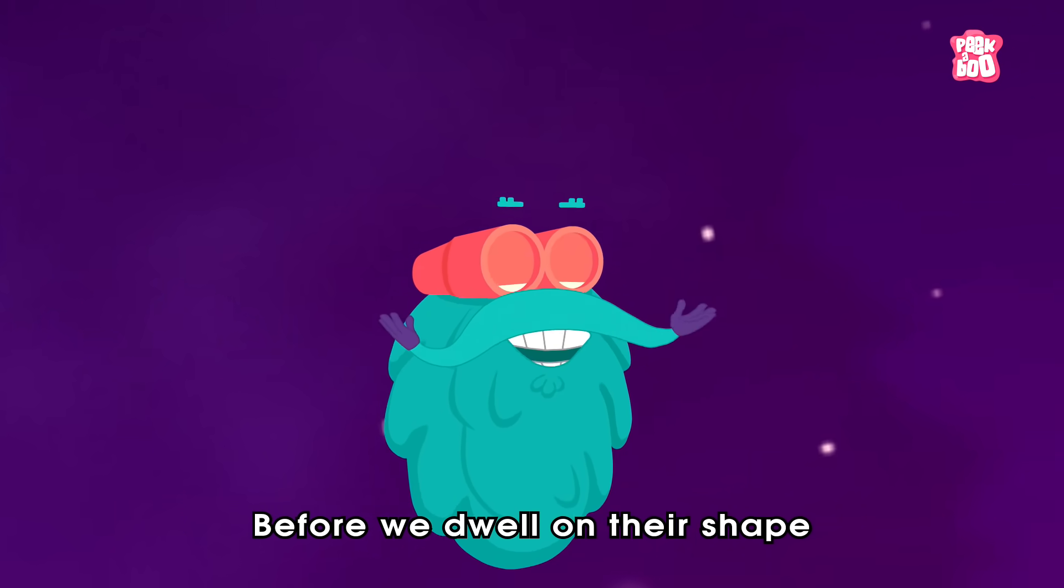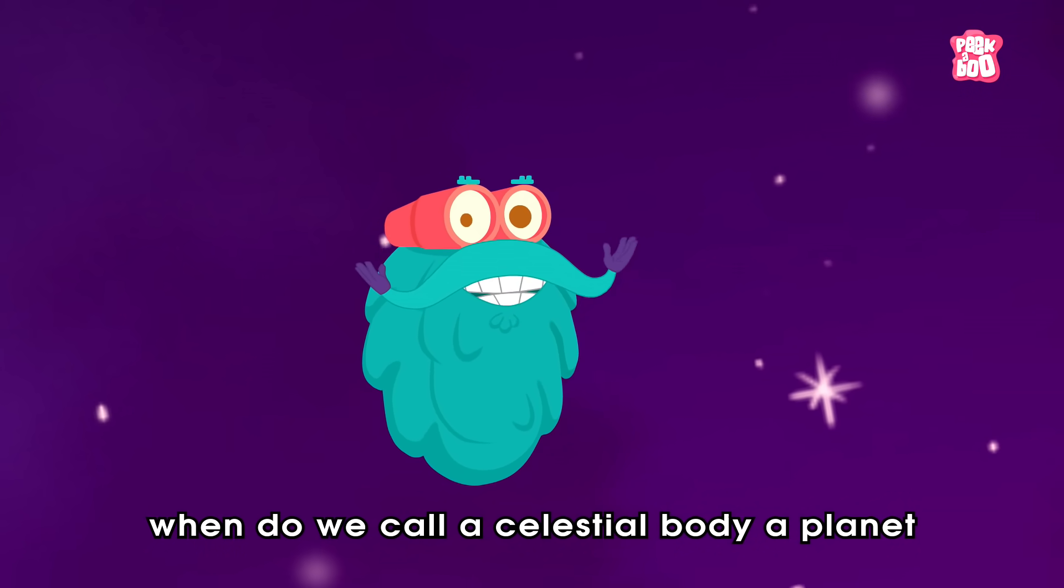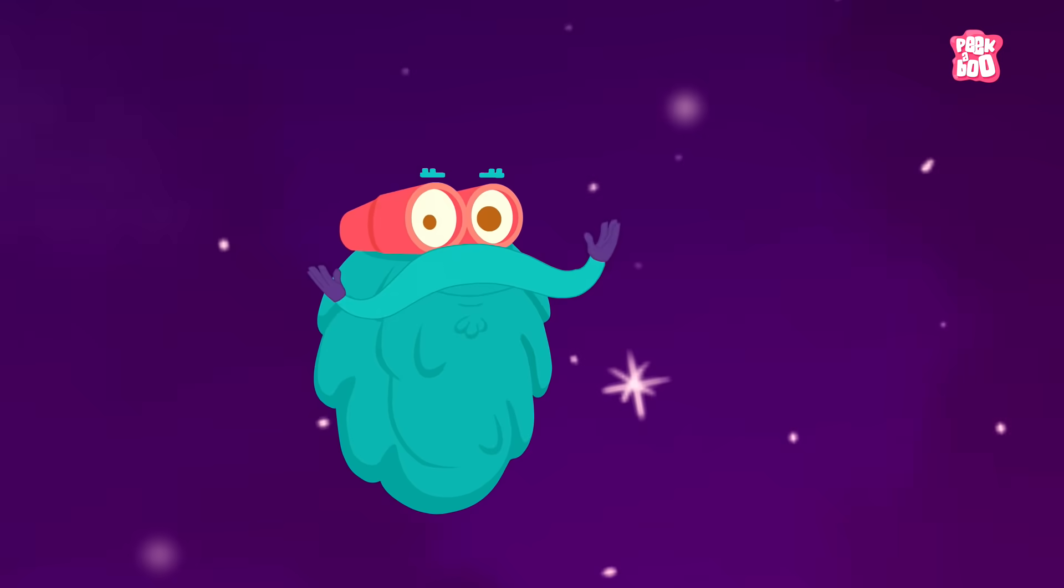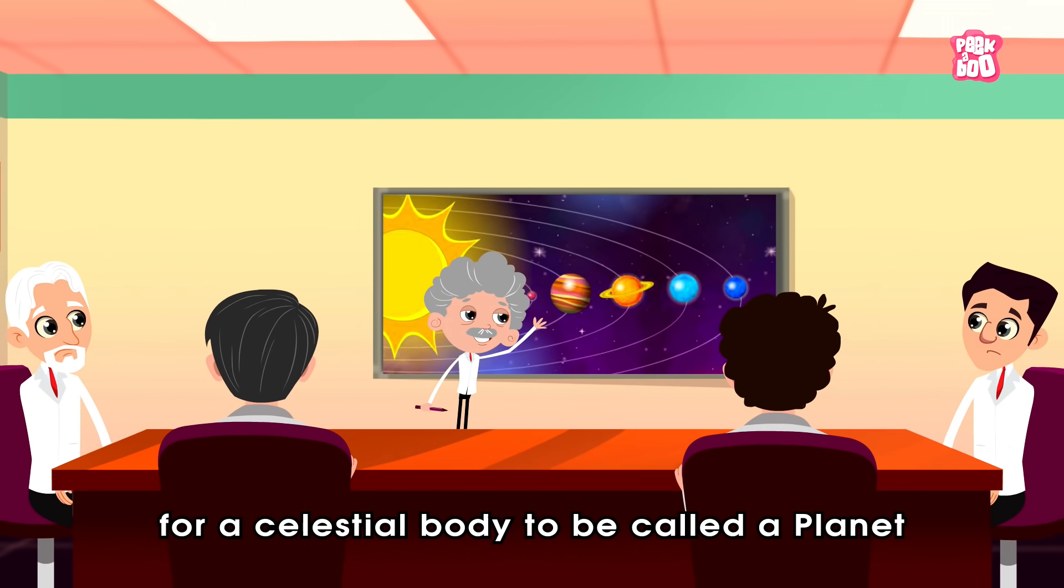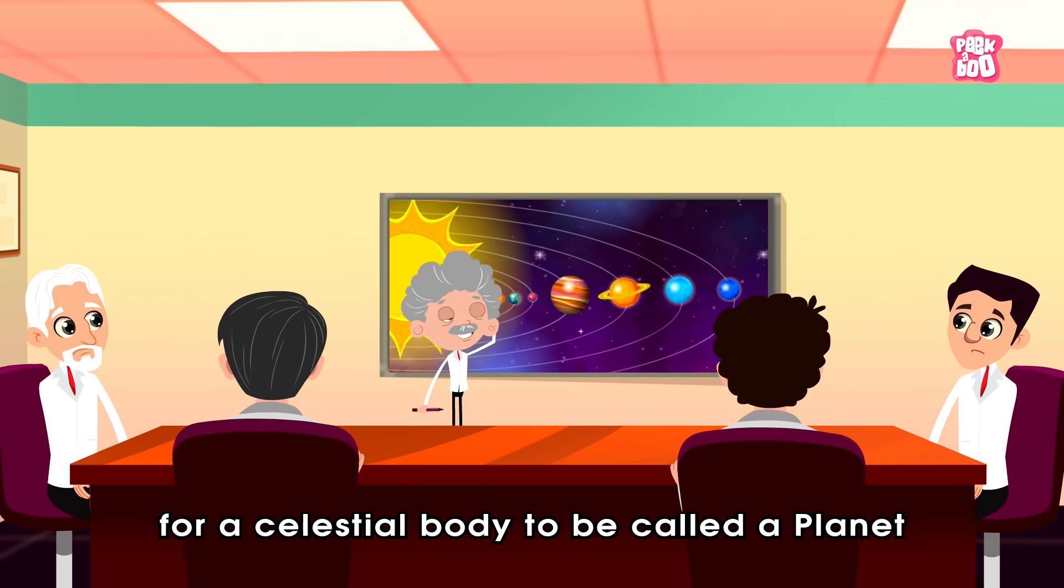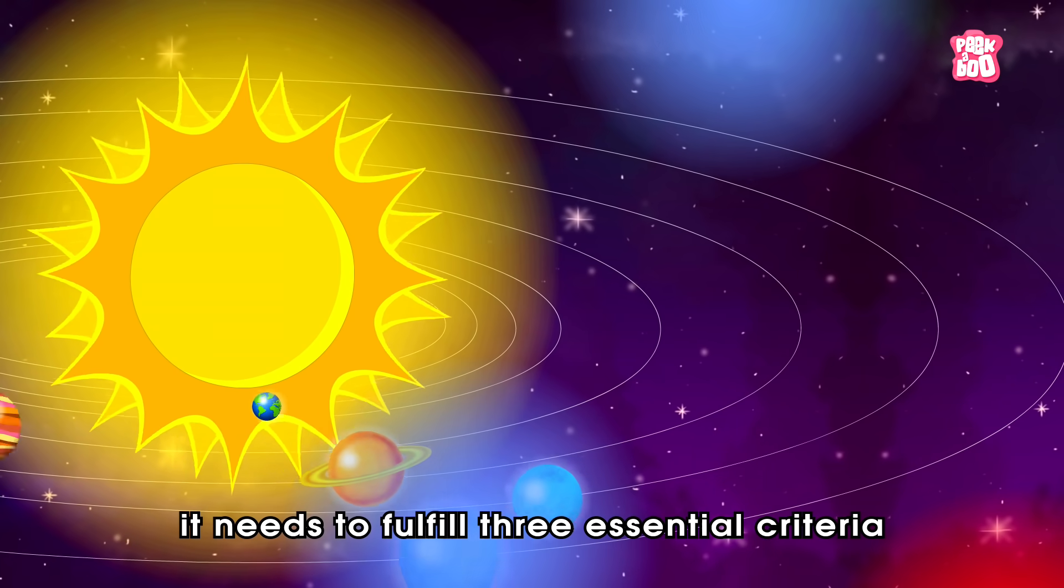Before we dwell on their shape, let us see when do we call a celestial body a planet. Well, according to IAU, for a celestial body to be called a planet, it needs to fulfil three essential criteria.